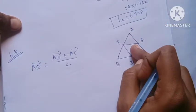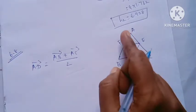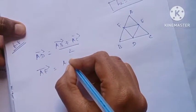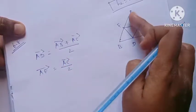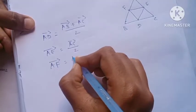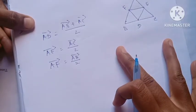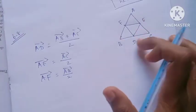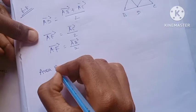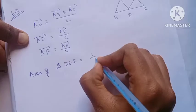AE — E is the midpoint, so AE is equal to AC/2. AF vector is equal to AB/2. So this gives us the area of the triangle in terms of these vectors.